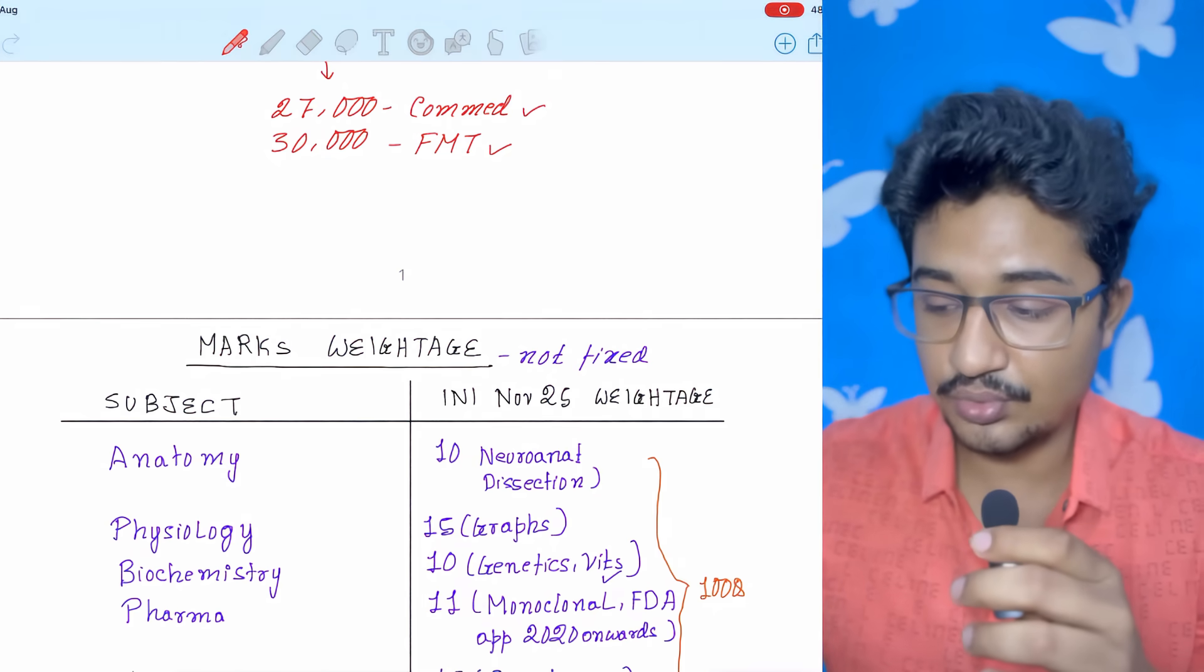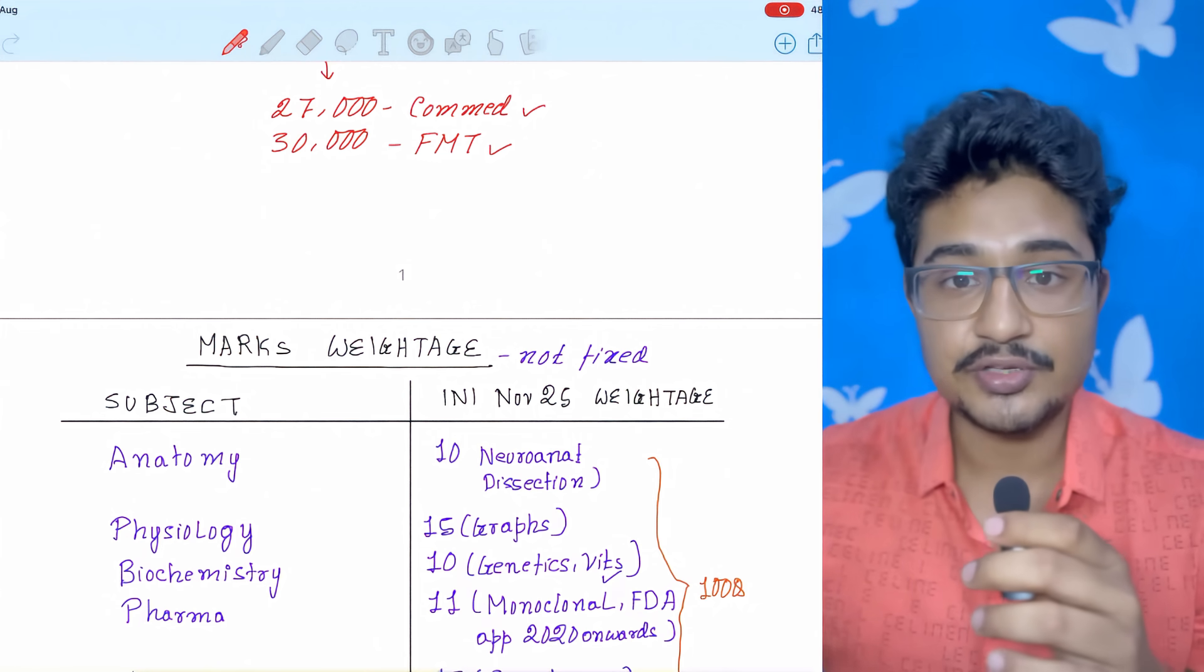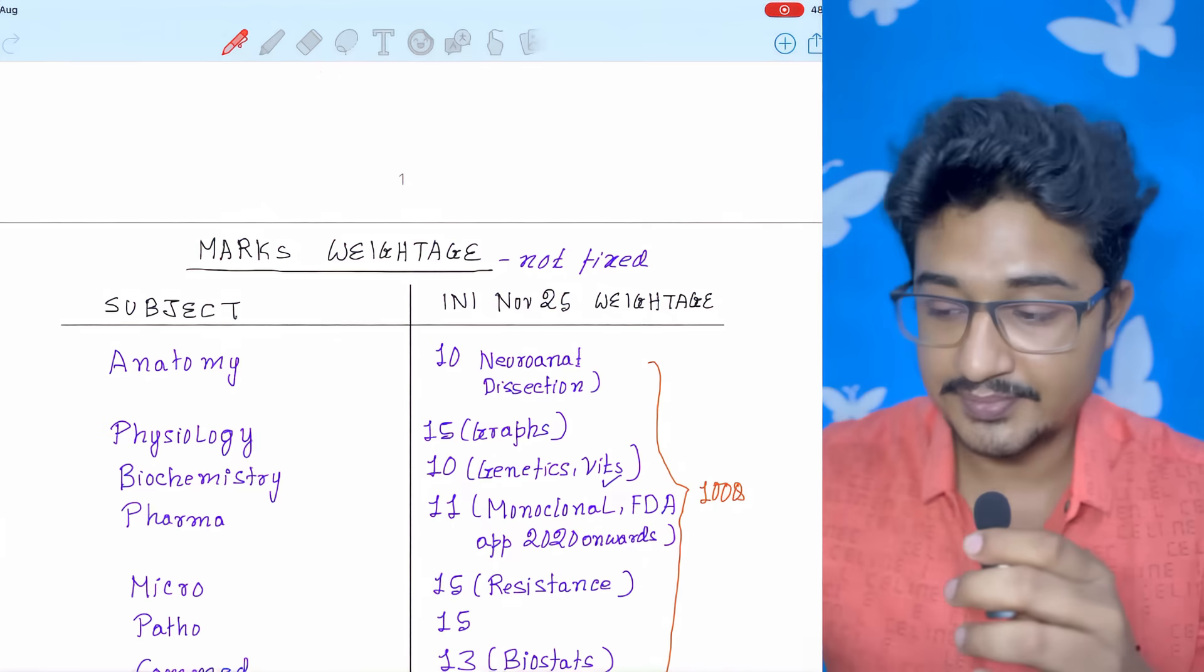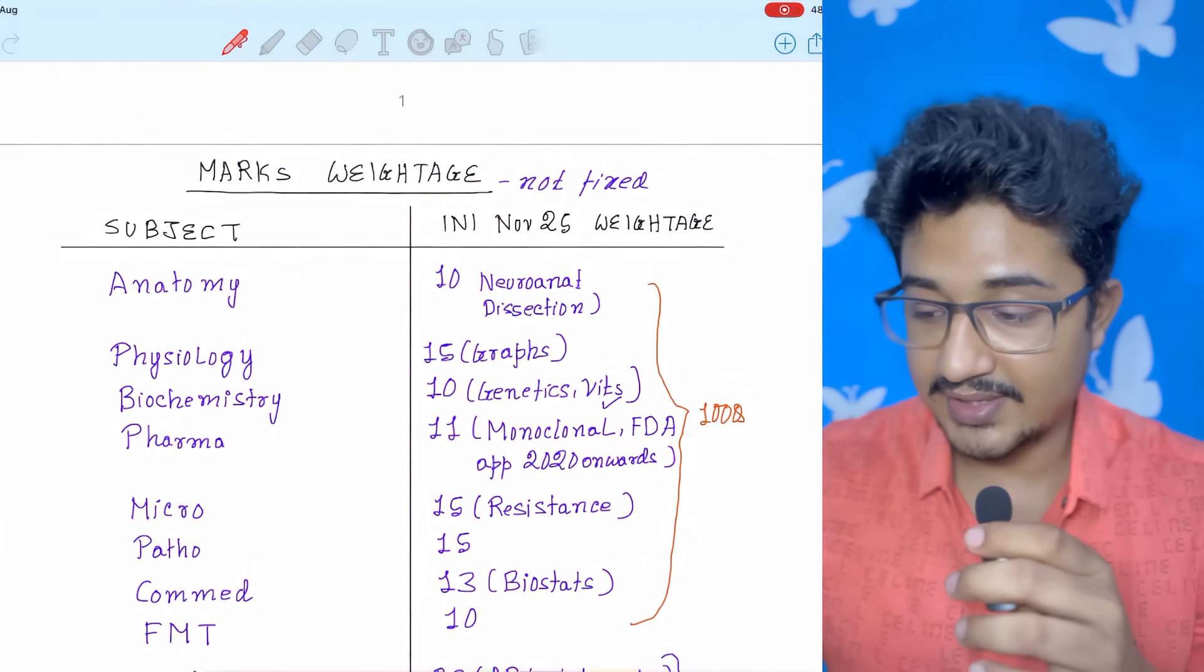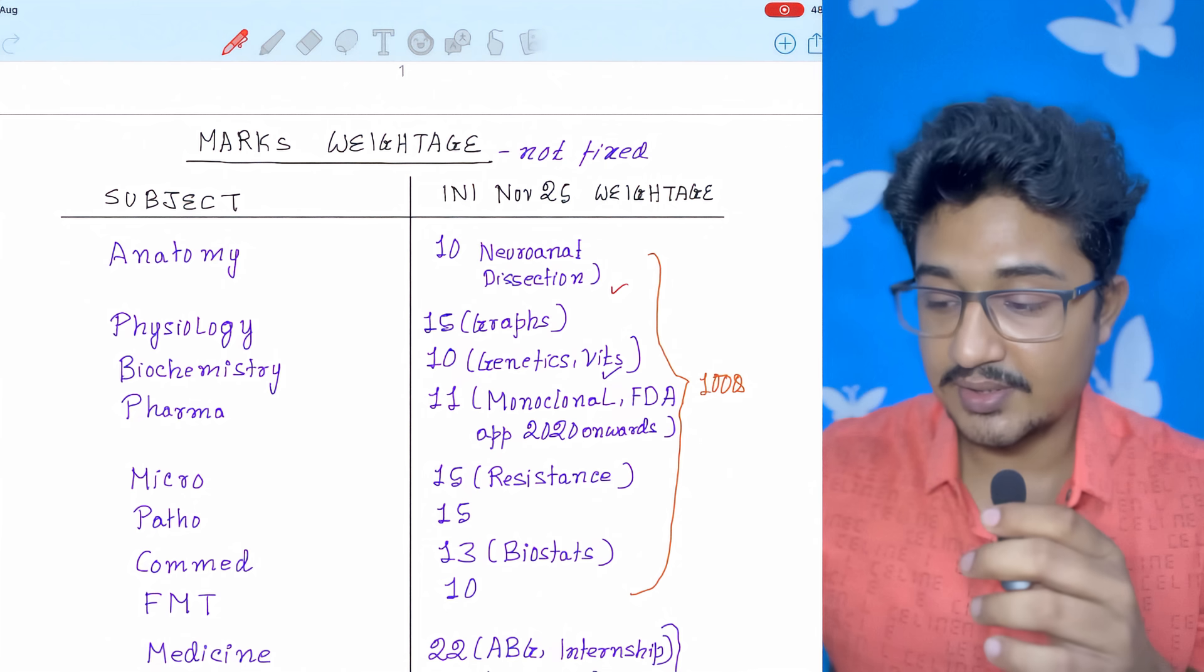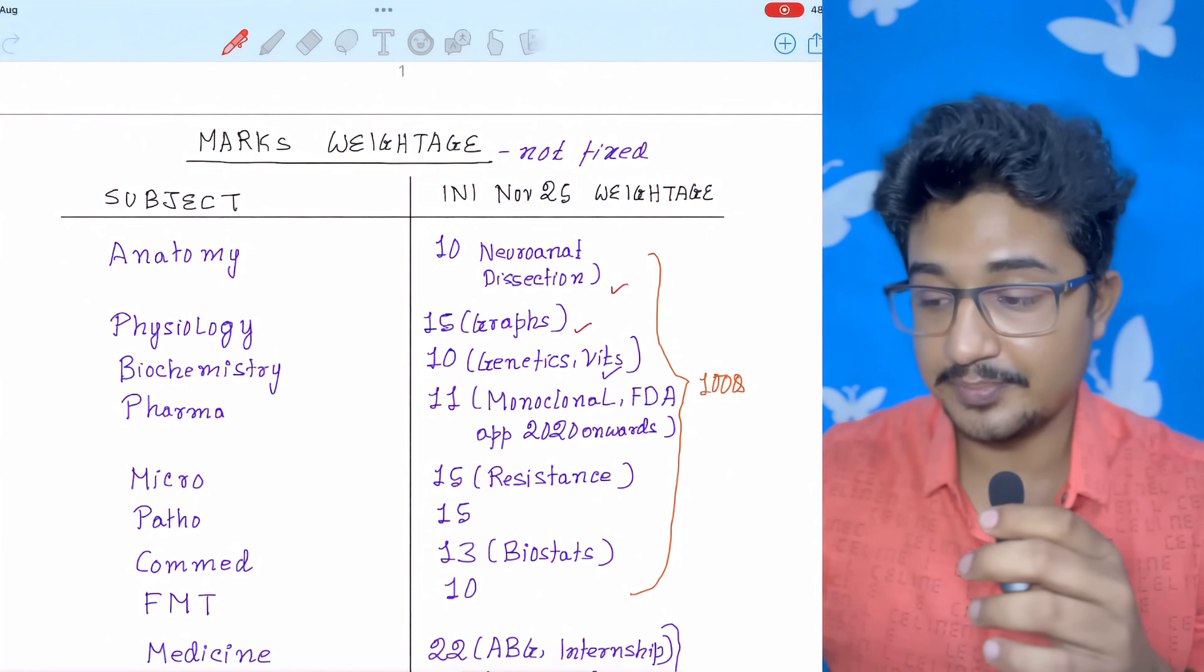First thing that you need to know is the marks weightage of INICT. Before giving any exam, you should know the pattern of the exam to give it the best shot. Like I have given the marks weightage and the topics that are important. Firstly in anatomy, neuroanatomy and the dissection are important. 10 questions came. Physiology, 15 questions came. Graphs are important.